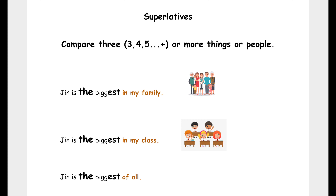So let's look at these sentences to help us understand. Gin is the biggest in my family. Gin is the biggest in my class. Gin is the biggest of all. So you are talking about one person in a group, in a family, in a class, or of all.